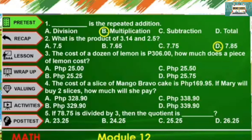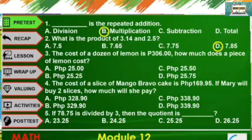Number 3: The cost of a dozen lemons is 306 pesos. How much does a piece of lemon cost? A. 25 pesos, B. 25 pesos and 25 centavos, C. 25 pesos and 50 centavos, or D. 25 pesos and 75 centavos. The correct answer is C, 25 pesos and 50 centavos.